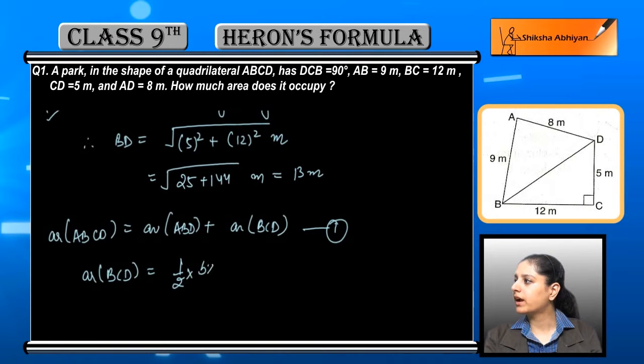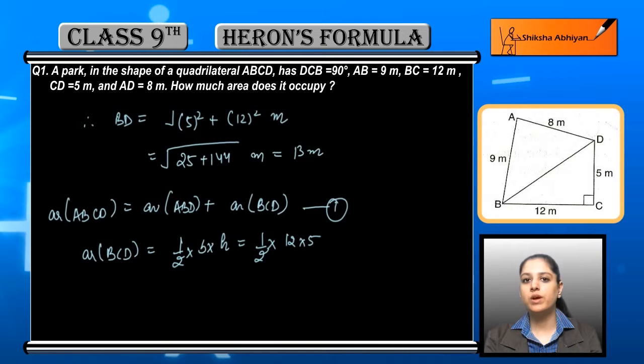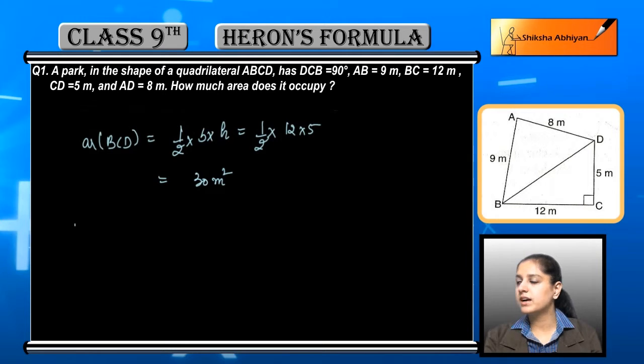We have this as equation 1. Area of triangle BCD equals half base times height because it is a right-angle triangle. It equals half times 12 times 5, so 30 square meters is the first triangle's area.